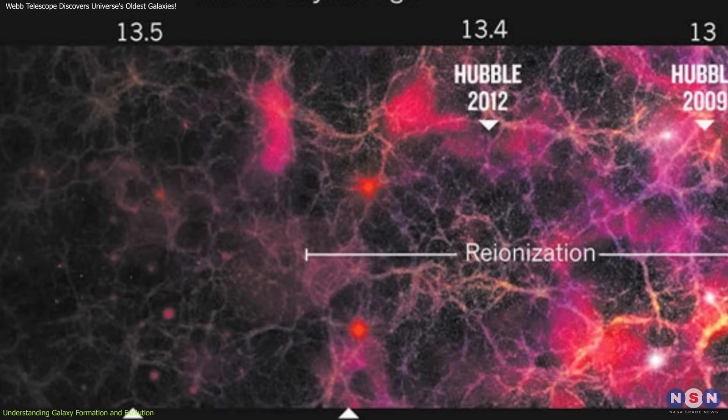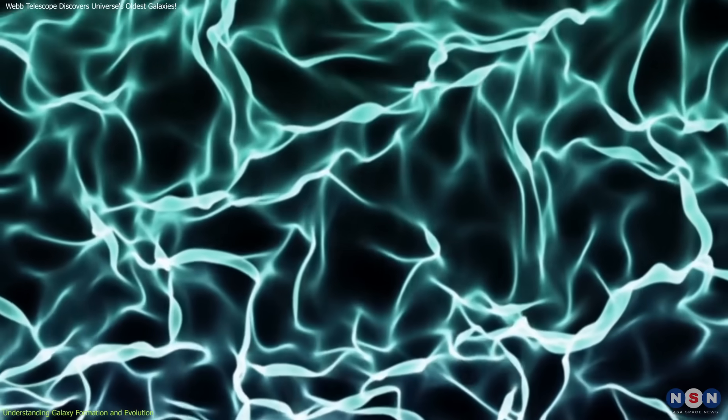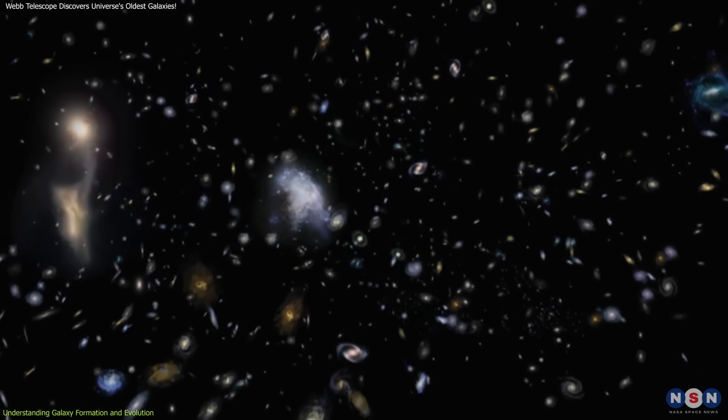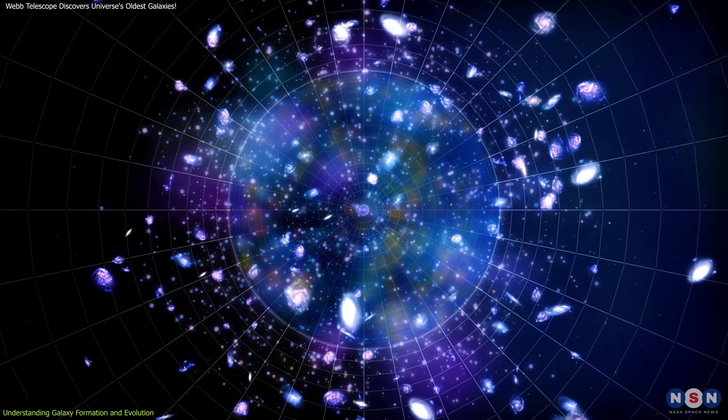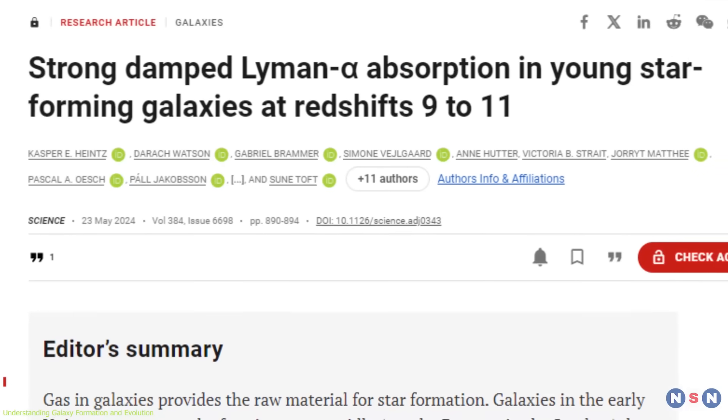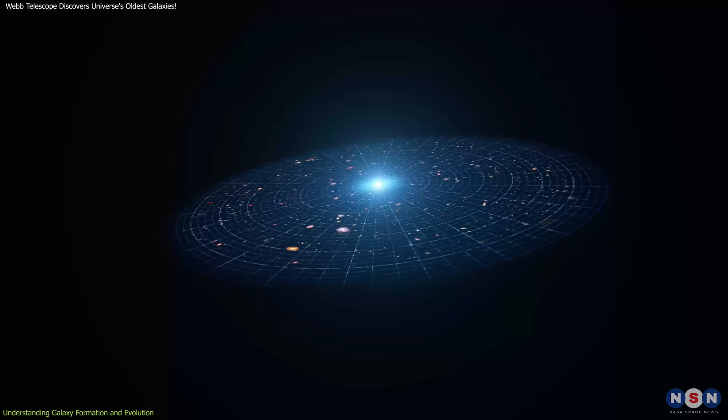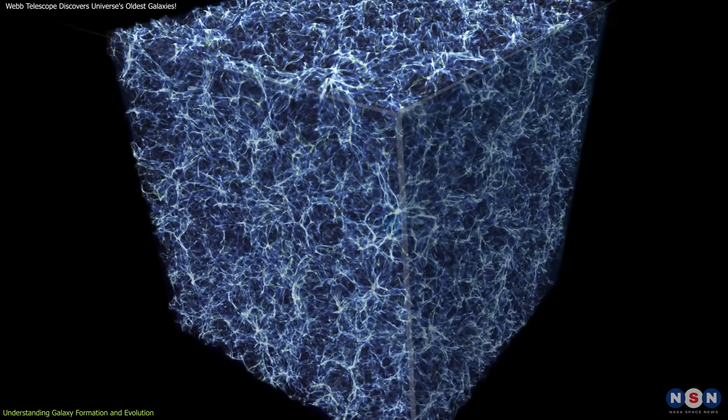By studying galaxies that formed at different epochs, researchers can observe the effects of dark energy on the expansion of the universe and the distribution of galaxies throughout cosmic history. Such studies are crucial for comprehending how dark energy influences cosmic expansion and affects the large-scale structure of the universe.